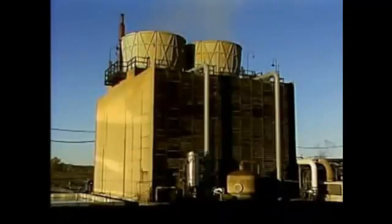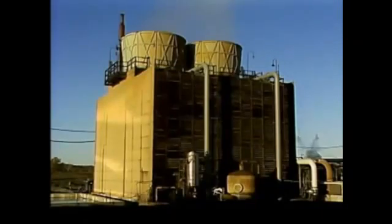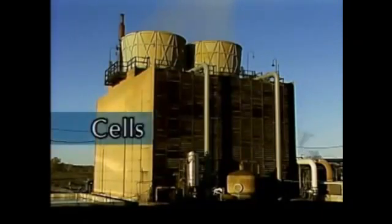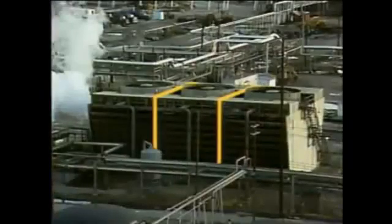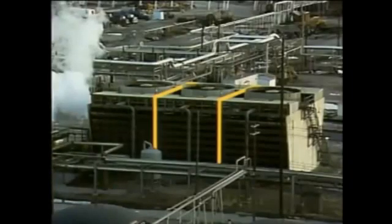Regardless of the type of cooling tower, there are some components that are common to most towers. For example, many towers are divided into sections called cells. This tower has three cells. Each cell contains all of the components of a single tower, except they share a common catch basin. Each cell of a tower can be operated independently, so the proper amount of cooling can be maintained by taking one or more cells out of service or placing them in service.